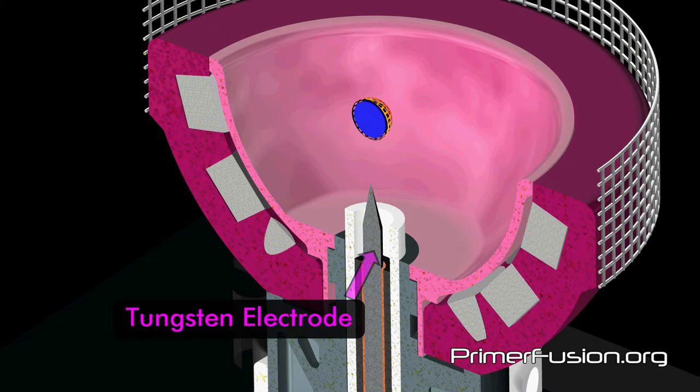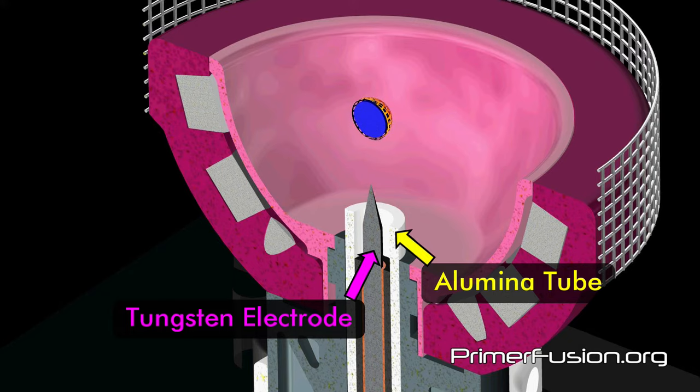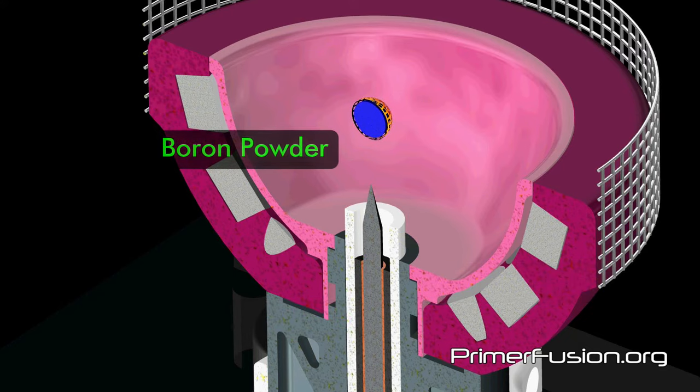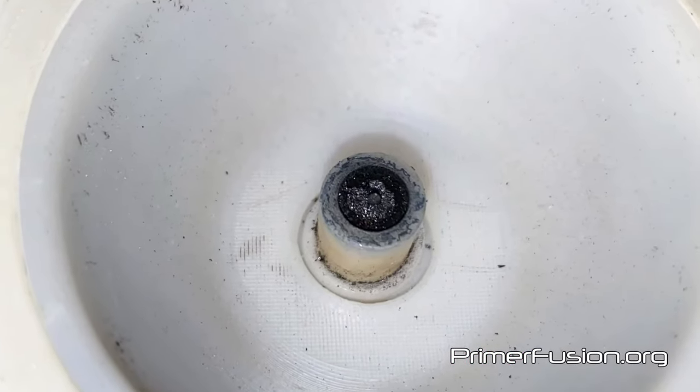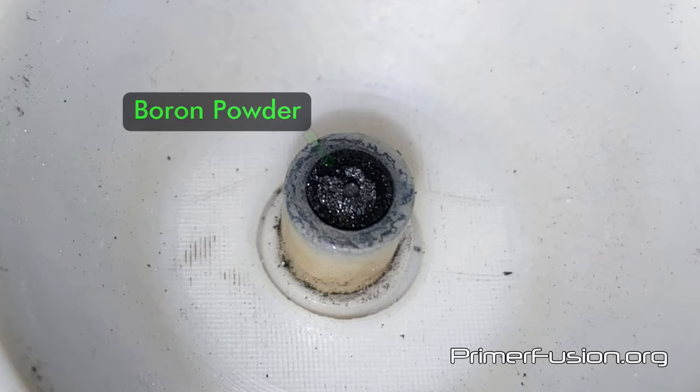At the bottom of the bowl-shaped magnetic array, we have the tungsten electrode inside an alumina ceramic tube. Boron powder was then placed inside the alumina tube. High purity hydrogen gas was then used to purge the reactor vessel before taking it to a high vacuum level.